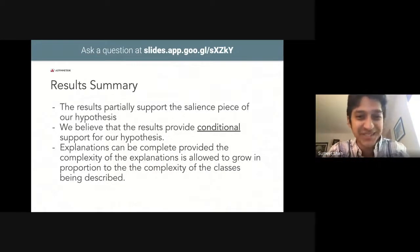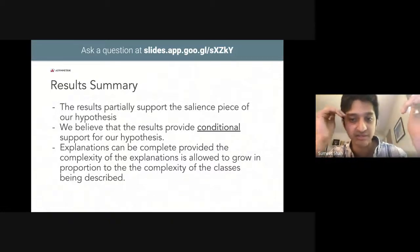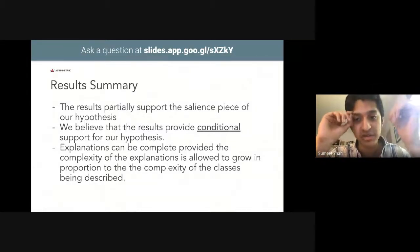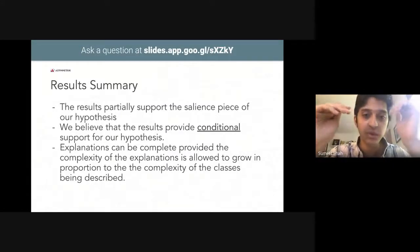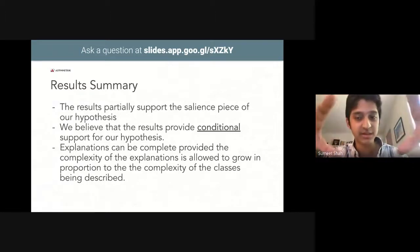To summarize all of that, the results of both experiments on both datasets indicate that the LIME framework has the potential to generate explanations that are sufficient, salient, and sometimes both. These results provide conditional support for our hypothesis that the LIME framework is capable of generating sufficient and salient explanations, with the condition being that the complexity of the explanations must be adequate to capture the complexity of the classes being described. More importantly, in our experiments we've been able to implement concrete evaluation methods for generated explanations.